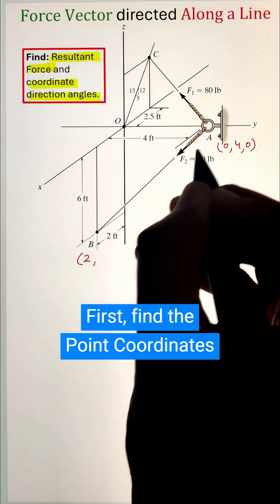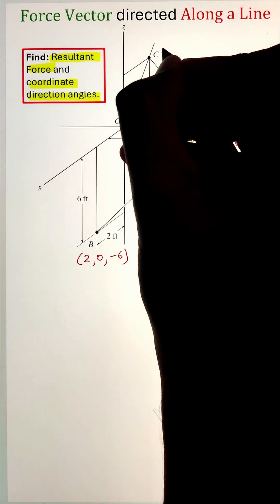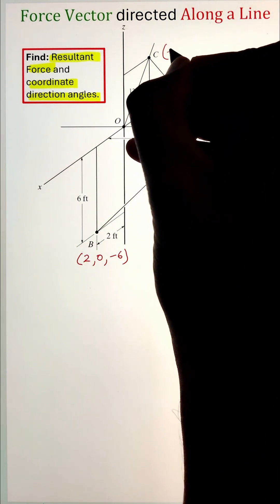To start, point A lies at a distance of 4 feet along the y-axis, so the point coordinates will be 0, 4, 0.